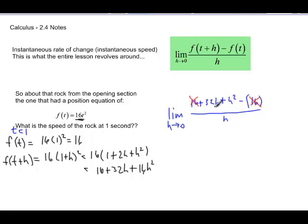So when I factor the h out, I have 32 plus h divided by h, and I'm going to look at the limit of that as h goes to 0. What happens is when these h's cancel out, you're going to end up with 32 plus h.